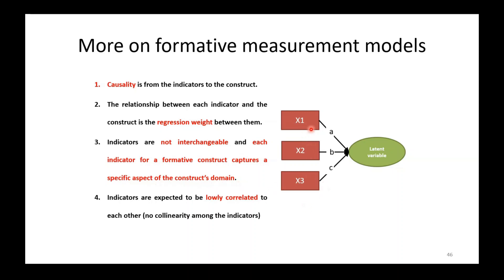If you delete any of these items you are losing some information from your model, so you should be very careful when dropping items from a formative measurement model. Number four: indicators are expected to be lowly correlated to each other — no collinearity among the indicators should be observed, otherwise we will face problems in the analysis.